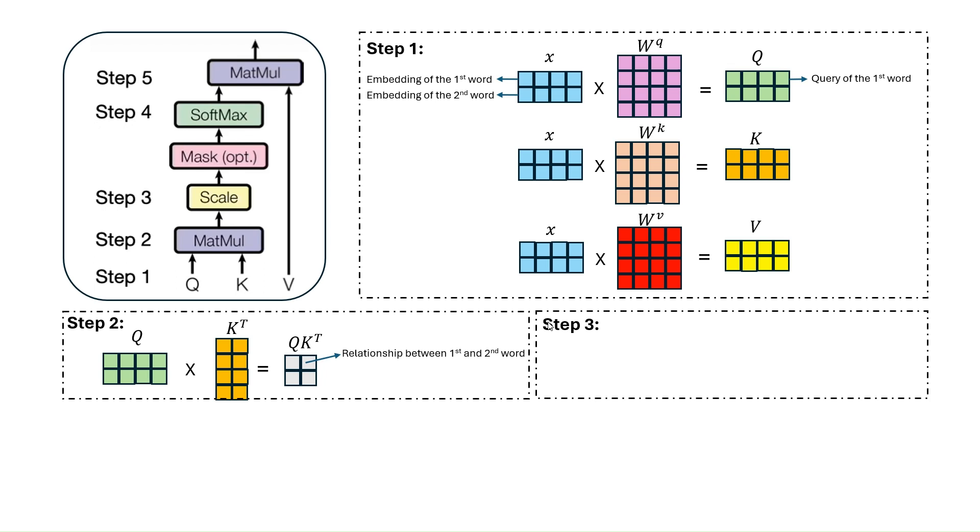In step three, we scale the computed similarity matrix by dividing it by the square root of dk. dk is the number of columns of the key matrix. This prevents the dot products from becoming too large or too small. In fact, it helps to stabilize the gradients during training and improves the overall performance of the model.